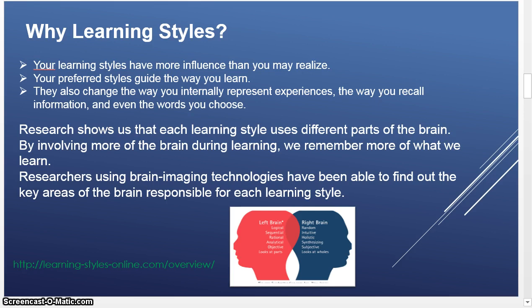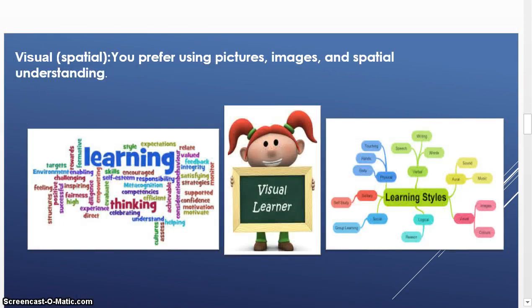Let's go through the styles one by one. Visual-spatial involves pictures, images, and spatial understanding — visual thinking, visual learning, visual teaching. These are the challenging strategies and feelings associated with visual learning.